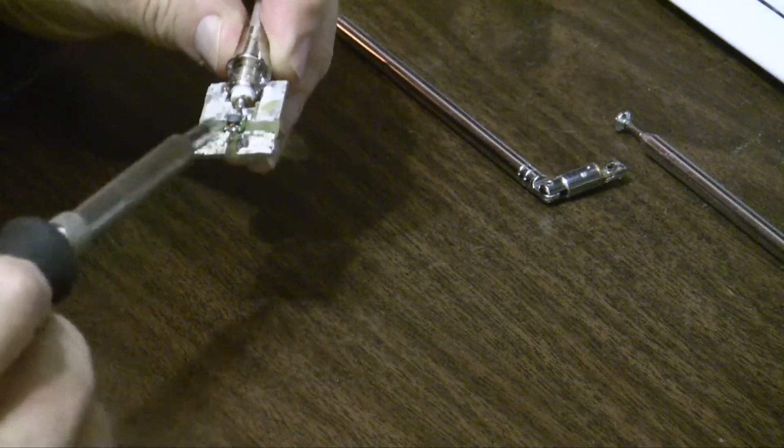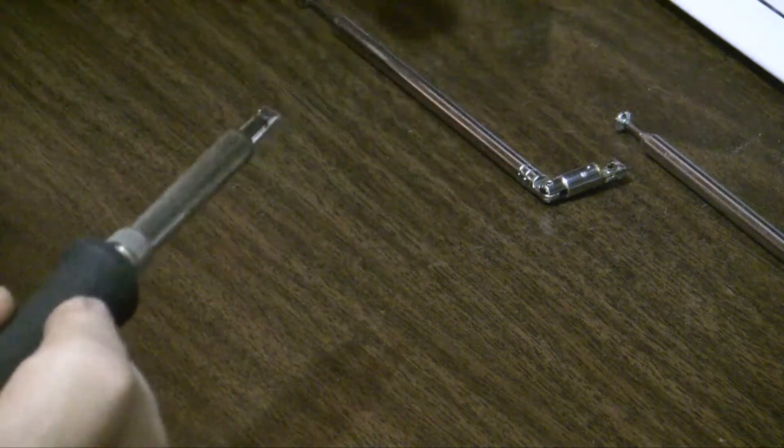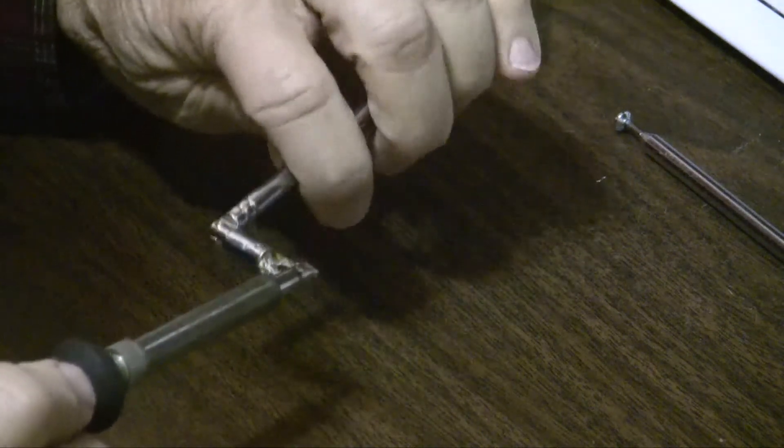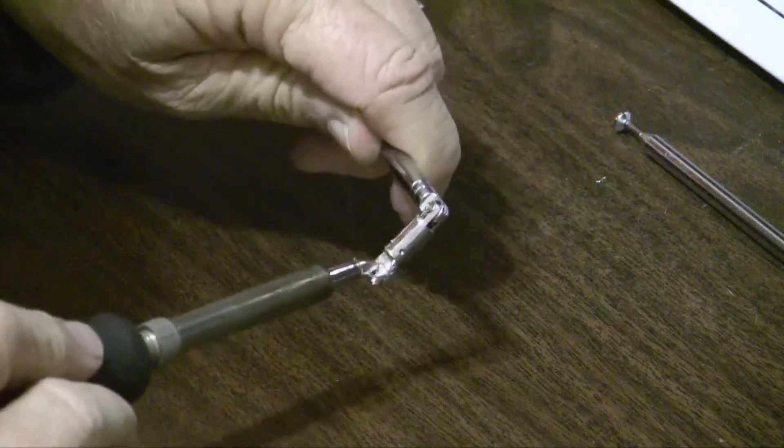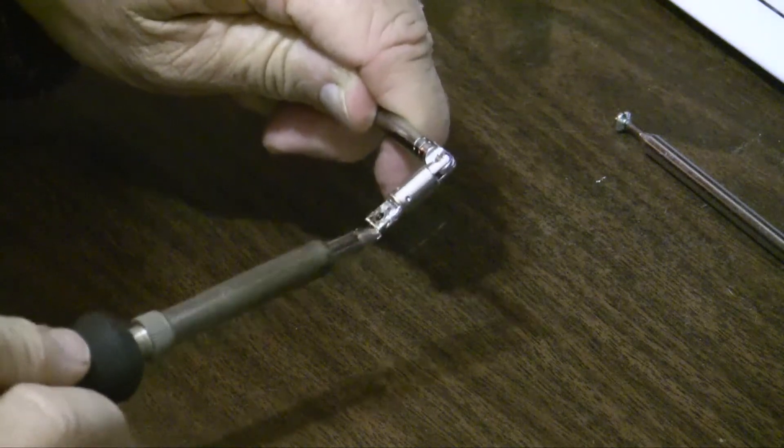We'll just leave the solder that's on here because we'll use it later. We can remove whatever we can of the solder here to make it easier to mill this down.